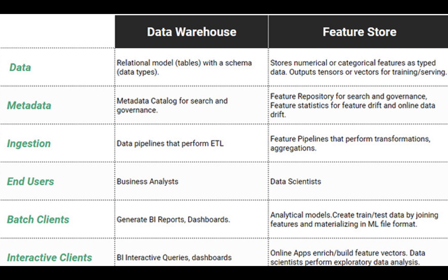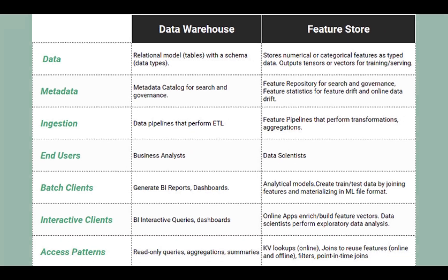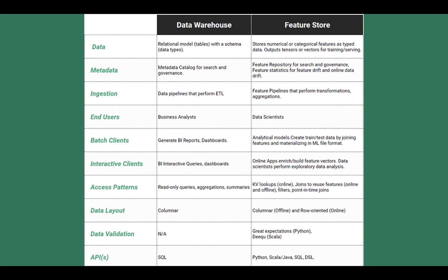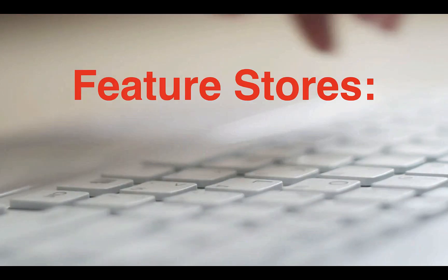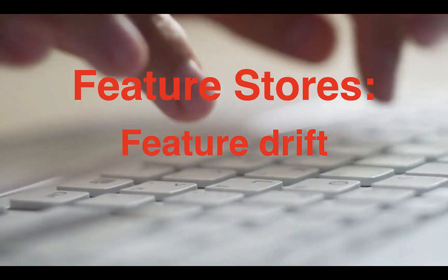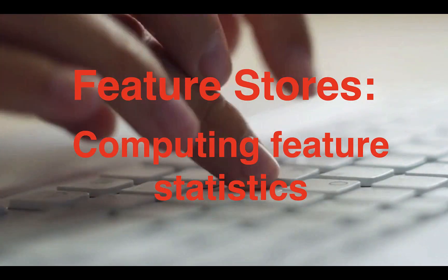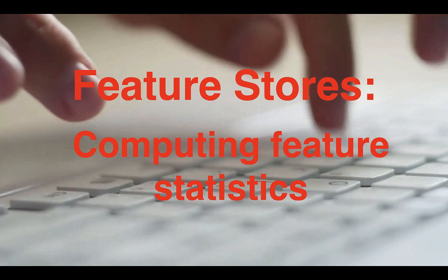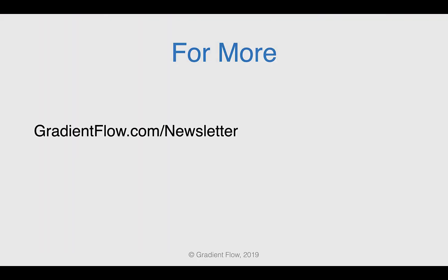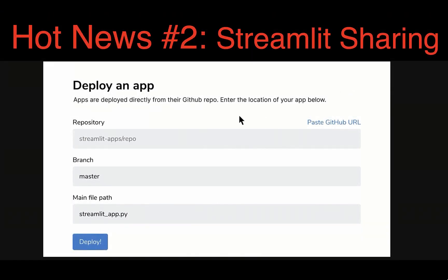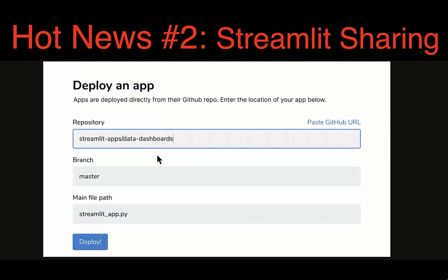Data warehouses are used primarily by business analysts for interactive querying and for generating historical reports and dashboards. Feature stores are used by data scientists and by applications to build predictive models and derive business insights. Feature stores are also useful for detecting feature drift and data drift, and for supporting computing feature statistics. See Gradient Flow Newsletter number 21 for more.